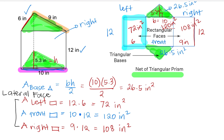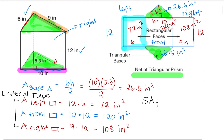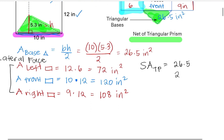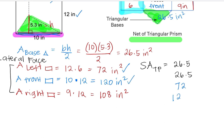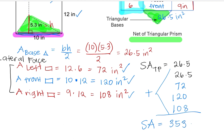The height is the same for all three, but the widths are different. Now we are going to add all the areas of each of the shapes to find the surface area of the triangular prism: 26.5 plus 26.5 for the two bases, plus 72 for the left side, plus 120 for the front, plus 108 for the right side. The surface area of the triangular prism is equal to 353 inches squared.